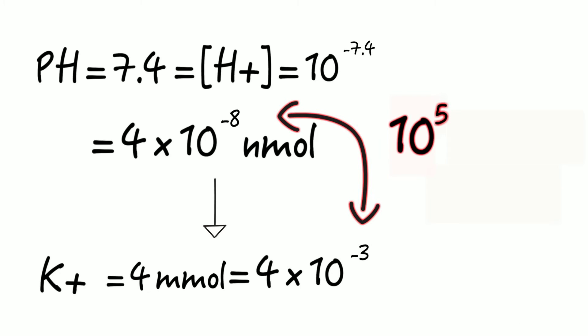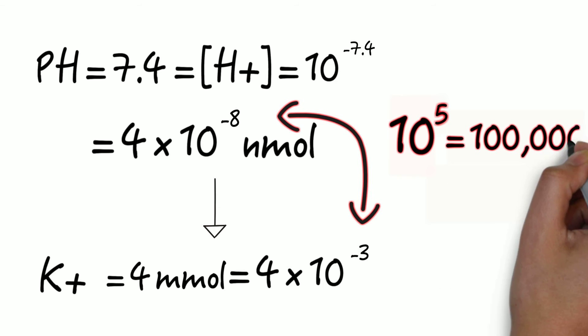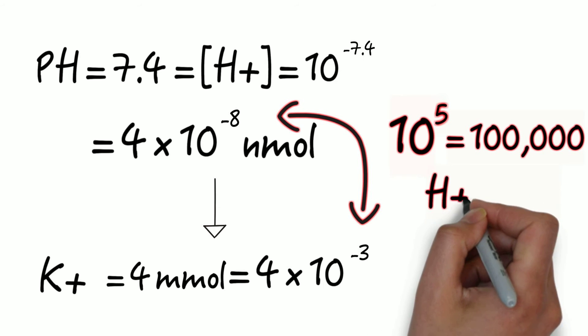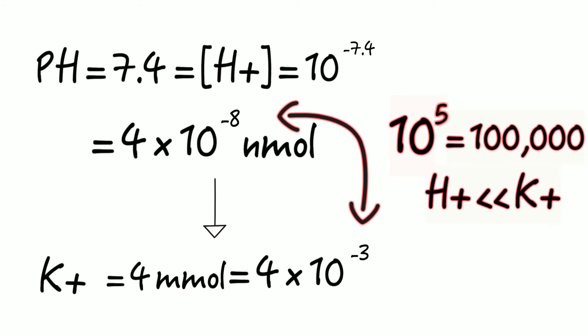Well, that's a factor or gradient, however you want to call it, of 10 to the fifth. So that means, in other words, that the concentration of hydrogen ions is 100,000 times lower than the concentration of potassium ions in the blood.